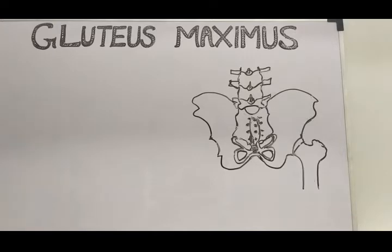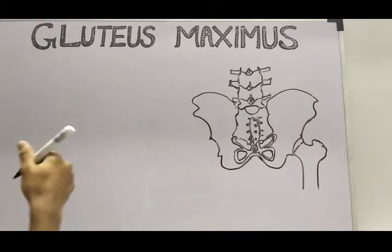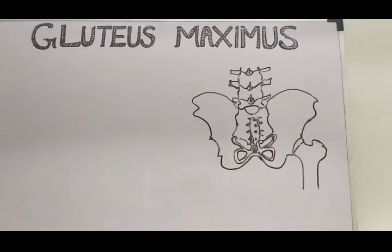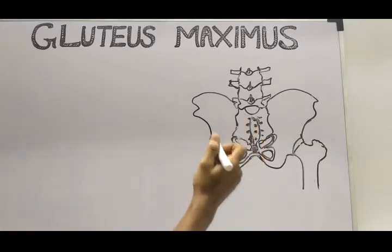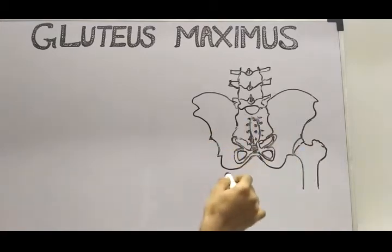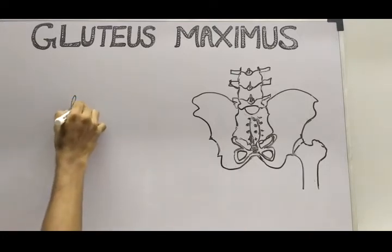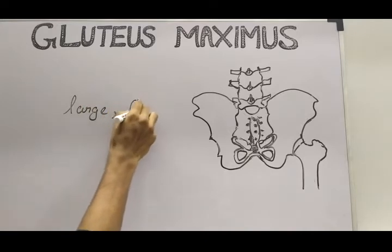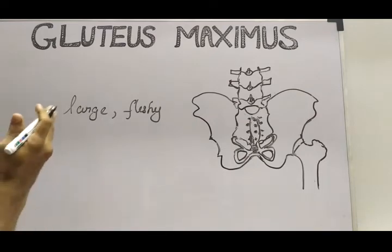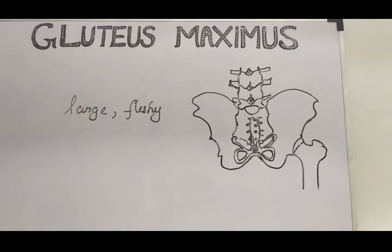Hi guys, welcome to our channel Physio Vibes Anatomy. This is Ashik. Today we are going to see some interesting topic, which is the gluteus maximus muscle. This is one of the largest muscles of our body, present in the gluteal region — that is, behind the pelvic bones, in the posterior aspect of our pelvic region. This muscle is a large fleshy muscle present in our gluteal, or buttock, region.